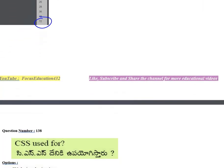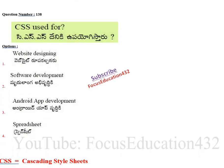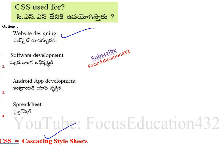Next question: what is CSS used for? CSS is known as Cascading Style Sheets. It is used especially in the field of website design. The full form — Cascading Style Sheets — may also be asked in the exam.